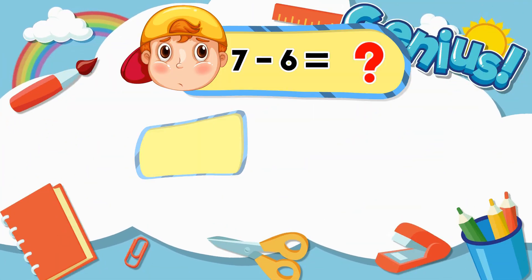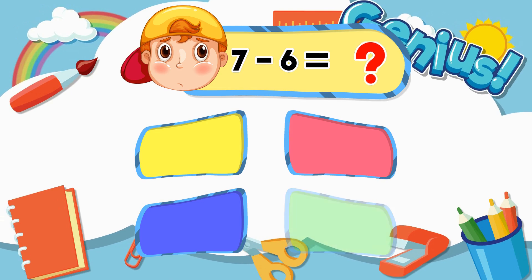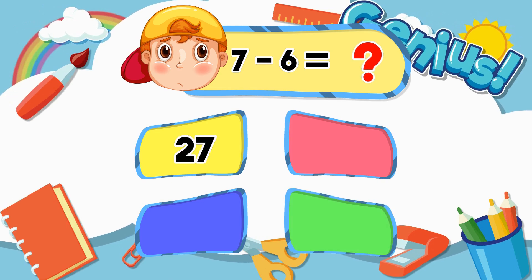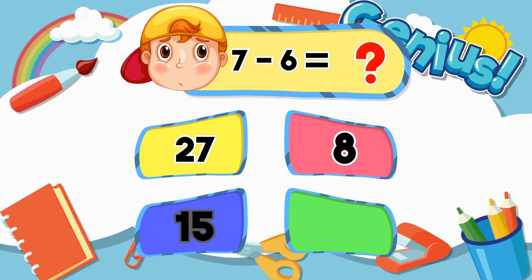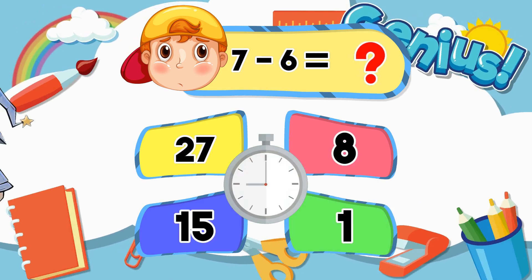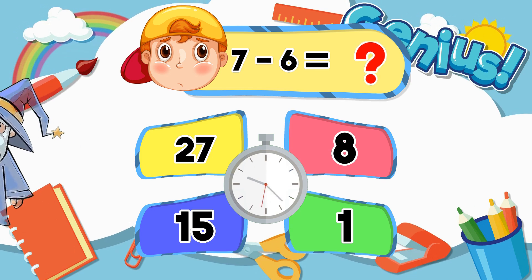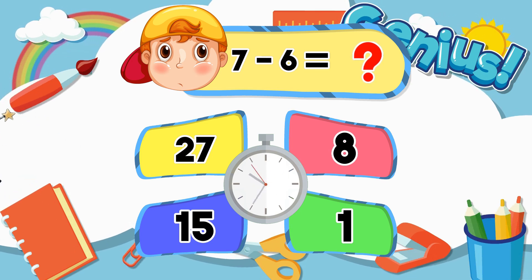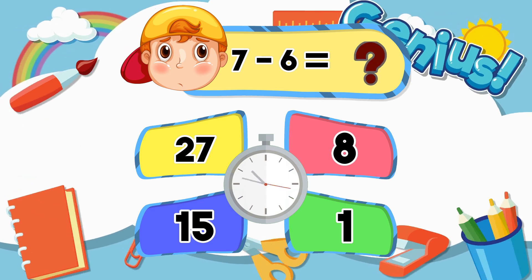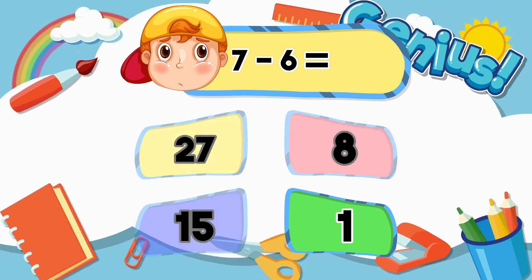What is 7 minus 6? 27, 15, 1. The correct answer is 1.